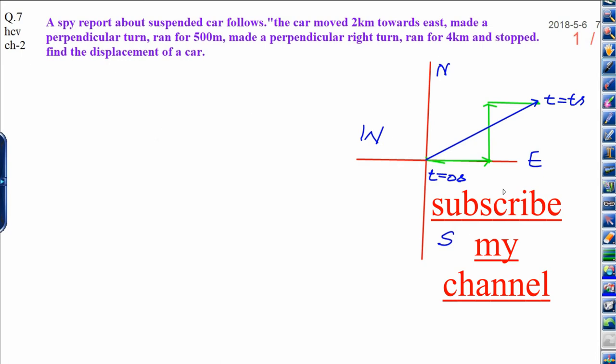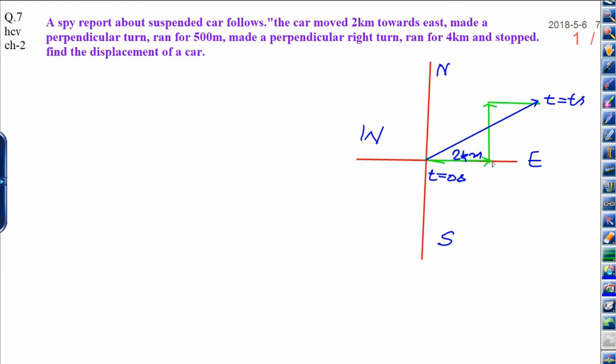The car moved 2 km to east. Let us see car is moving 2 km to east and take a left turn, perpendicular turn having 500 meter. 500 meter I can write 0.5 km. Now take a right perpendicular turn having 4 kilometer path.